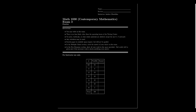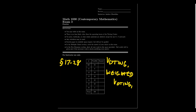Exam 3 is going to cover Lessons 17 through 28, and there were three main topics in those lessons. This is our political exam. We have our unit on voting, our unit on weighted voting — which is related but not exactly the same — and then what we most recently learned about: apportionment. These are the topics that will appear on Exam 3.